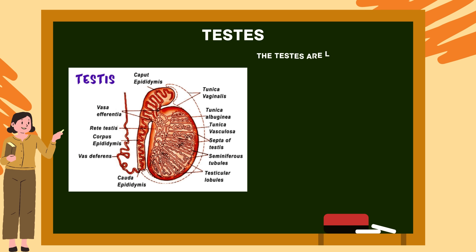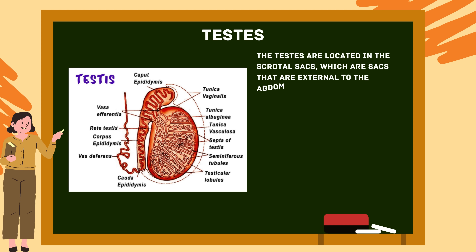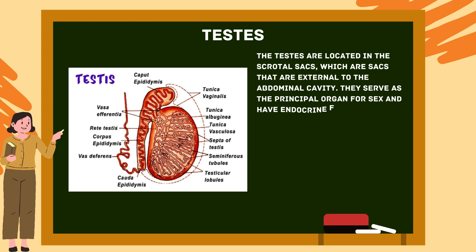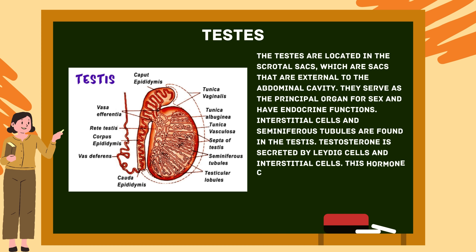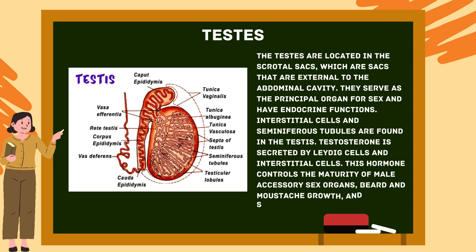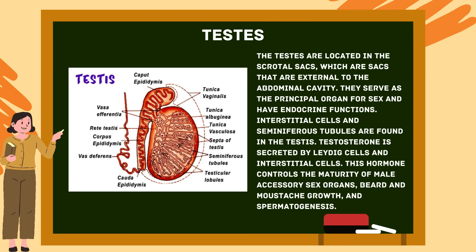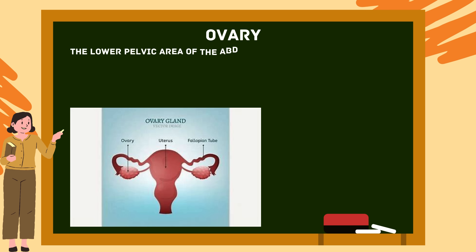Testes: The testes are located in the scrotal sacs, which are external to the abdominal cavity. They serve as the principal organ for sex and have endocrine functions. Interstitial cells and seminiferous tubules are found in the testes. Testosterone is secreted by Leydig cells and interstitial cells. This hormone controls the maturity of male accessory sex organs, beard and mustache growth, and spermatogenesis.